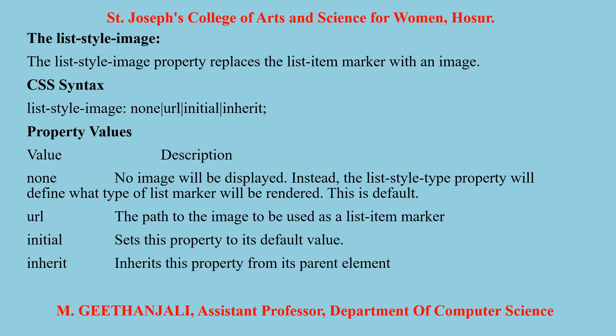The second one is list-style-image. The list-style-image property replaces the list item marker with an image. The CSS syntax is: list-style-image colon: none | URL | initial | inherit. Here, 'none' means no image will be displayed. 'URL' means a specific path of the image. 'Initial' means the property value is set to its default value automatically. And 'inherit' means it inherits the property from its parent element.